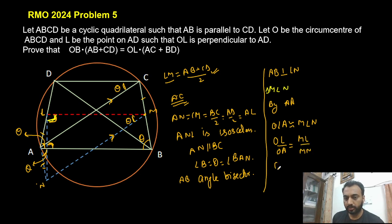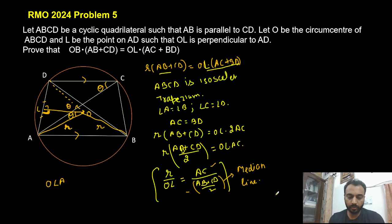So from the ratio I can say OL/OA is equal to ML/MN. So OL is OL, OA is R, ML is (AB + CD)/2 and MN is AC so that's what we want to prove. So this way we can prove the given result without trigonometry. I hope this is clear guys, thank you.